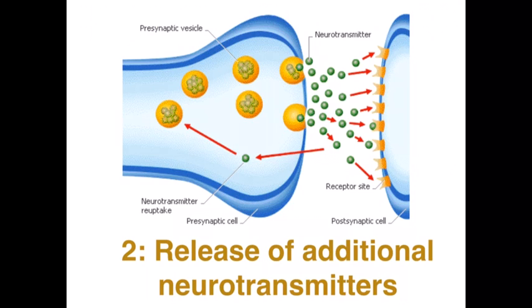Secondly, we can have additional neurotransmitters released from the presynaptic neuron. So not only do we have more receptor sites as a result of dendritic growth, but we also have more electrochemical messages sent in the form of these neurotransmitters, which again enhances the efficiency of the retrieval of these long-term memories.